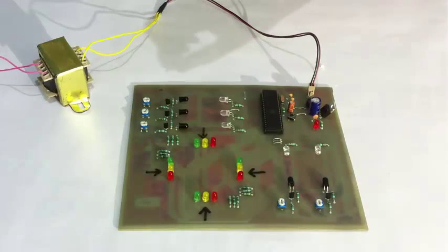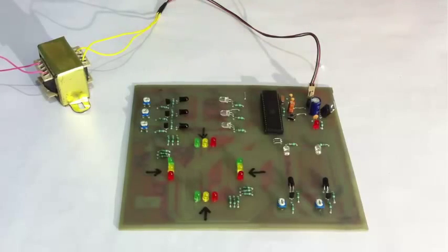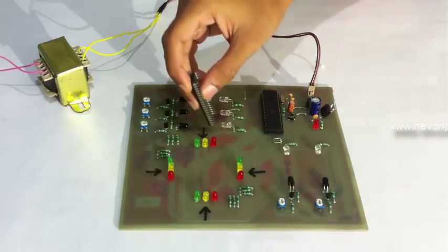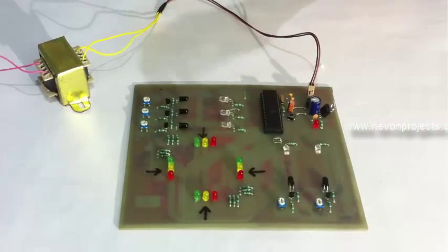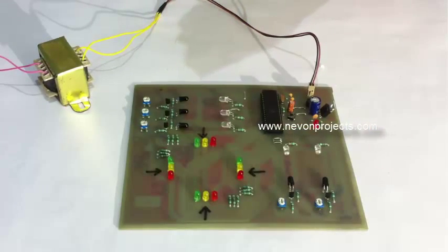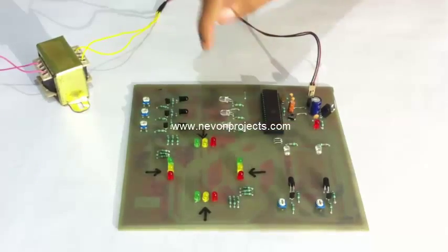Suppose a vehicle blocks the first IR receiver, we can detect there is minimum density at this post. If vehicles are blocking both IR receivers, the first and the second one, we can detect medium density. Similarly, if they are blocking all three receivers, we can detect maximum density at this particular post.